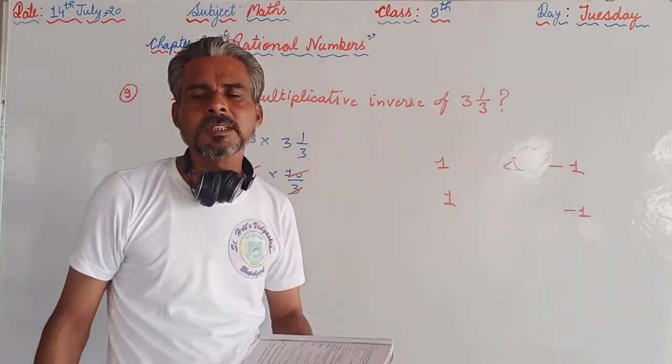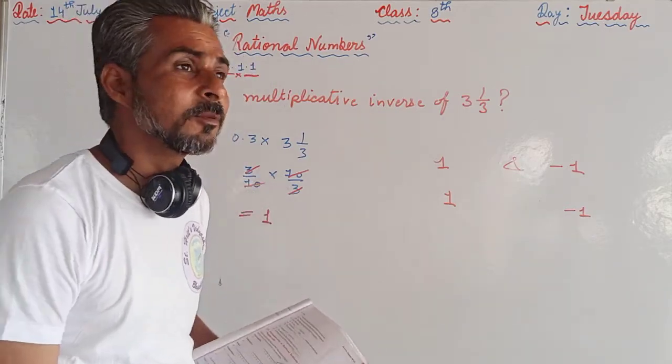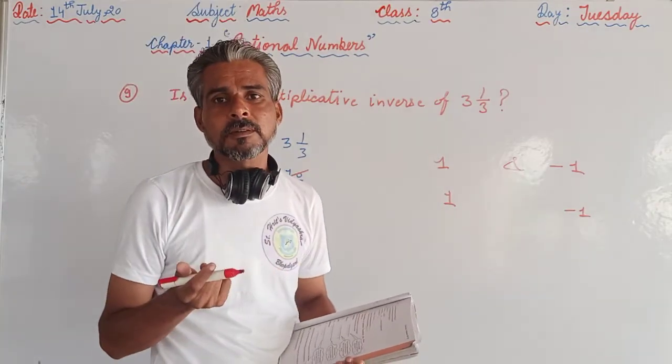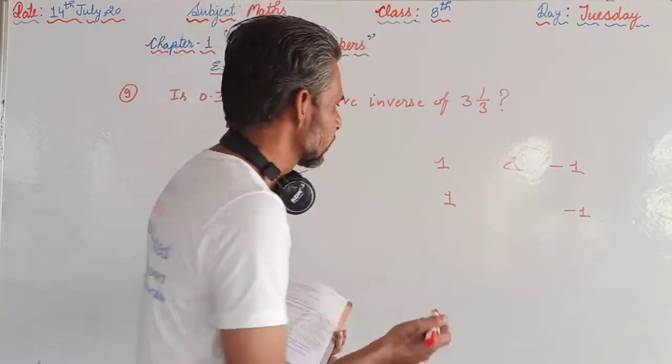The rational number that is equal to its negative. Any such rational number that is equal to its negative? Minus 1 is not equals to plus 1 or plus 1 is not equals to minus 1. But 0.